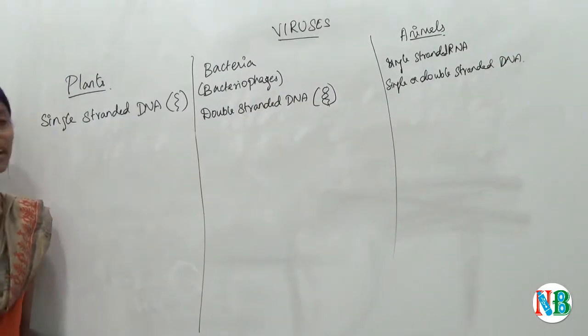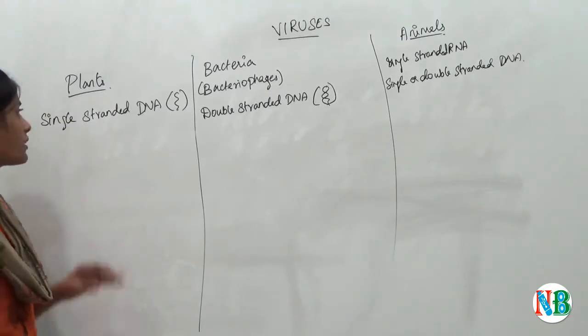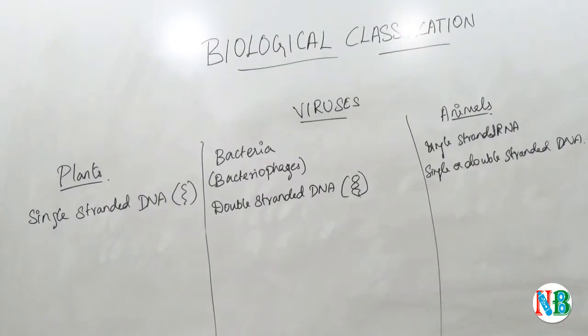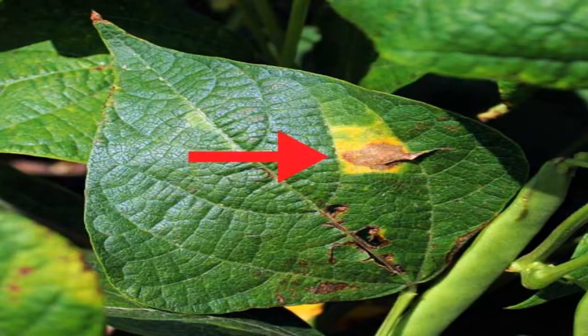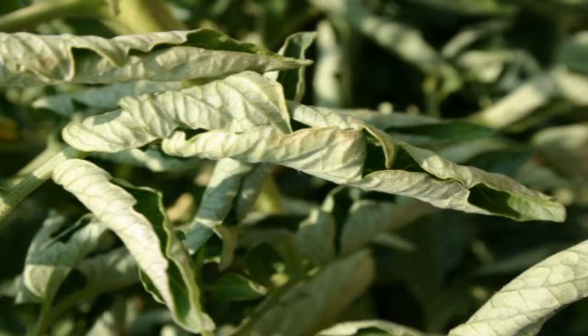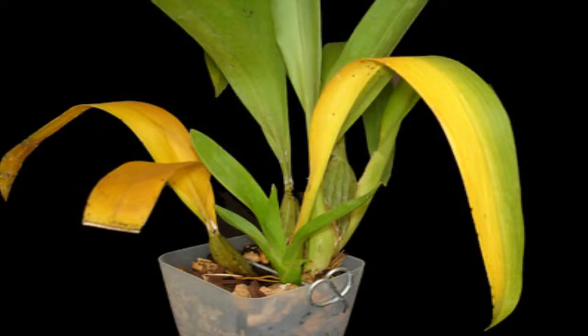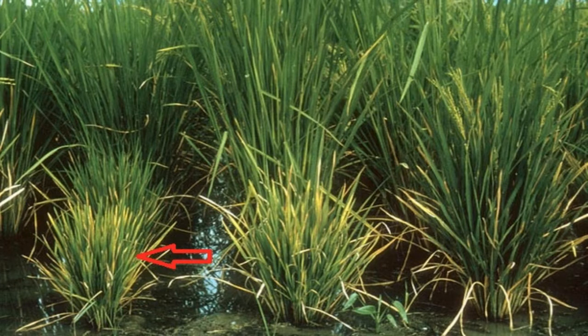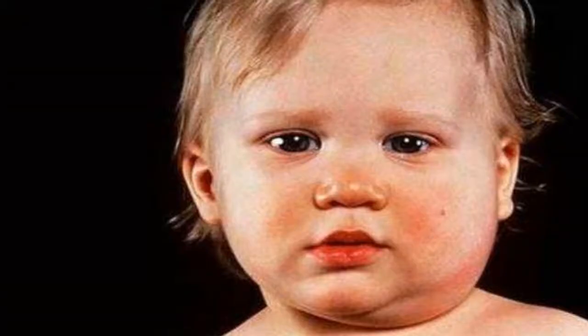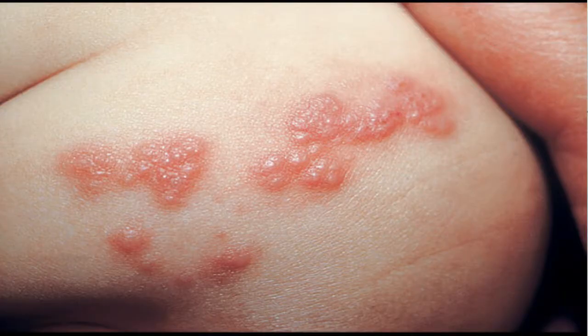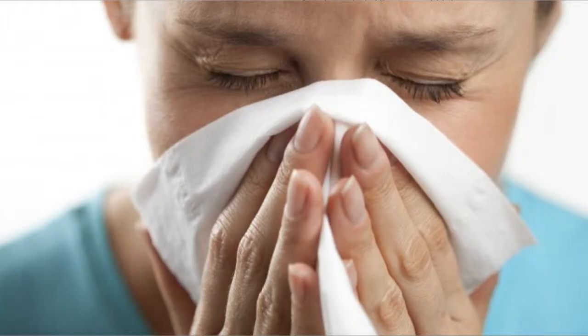Now we will see some of the examples for the viruses that are infecting plants and animals. The examples of viruses that infect plants are tobacco mosaic virus, and examples that infect animals include influenza and AIDS.